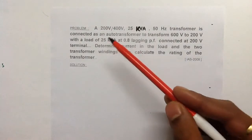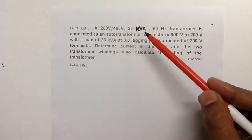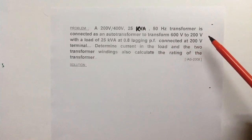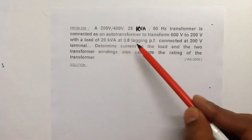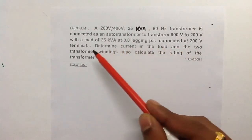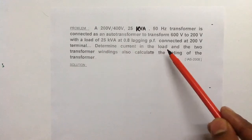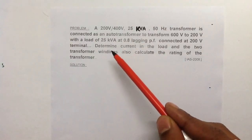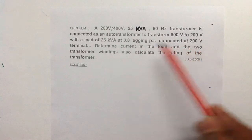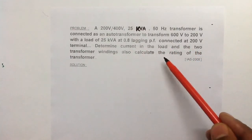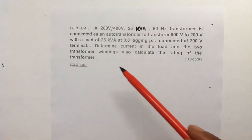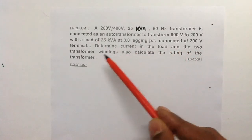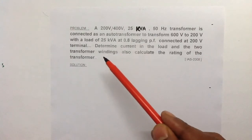In this question, a 200V/400V, 25 kVA, 50 Hz transformer is connected as an autotransformer to transform 600 volts to 200 volts, with a load of 25 kVA at 0.8 lagging power factor connected at the 200 volt terminal. The first part of the question is to determine the current in the load and in the two transformer windings.